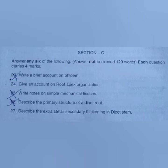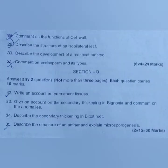26. Describe the primary structure of a dicot root. 27. Describe the extra-stellar secondary thickening in dicot stem. 28. Comment on the functions of cell wall. 29. Describe the structure of an isobilateral leaf. 30. Describe the development of a monocot embryo. 31. Comment on endosperm and its types.